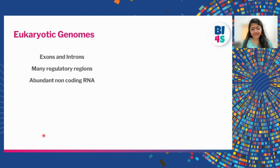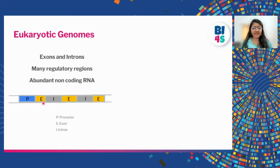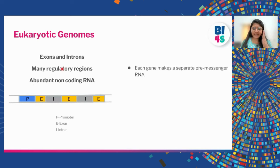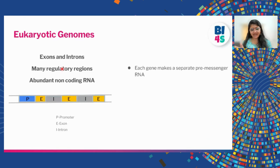In the case of eukaryotic genomes, it's completely different — there is a system of exons and introns. Each gene is divided into exons and introns, with many regulatory regions including a promoter, and many non-coding RNAs. A eukaryotic genome usually has about 20,000 to 30,000 genes. Unlike the prokaryotic genome where all genes in an operon are made together, these 20,000 to 30,000 genes are not made into RNA together — each gene makes its RNA separately.